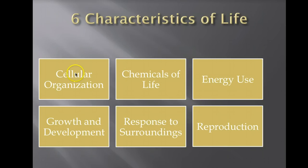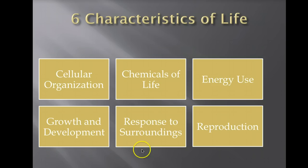So again, the six characteristics of life: cellular organization — all living things are made of cells; chemicals of life — all living things have certain chemicals; energy use — all living things use energy, whether making their own from the sun or gathering it by eating something else; growth and development — growth is getting larger, development is becoming more complex; response to surroundings — a stimulus causes a response; and reproduction — all living things reproduce in order for that species to continue surviving.